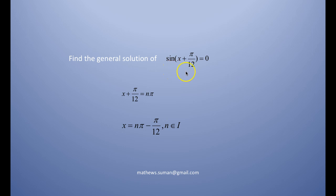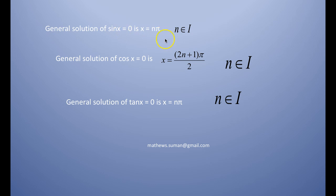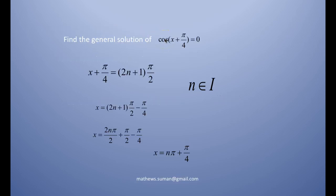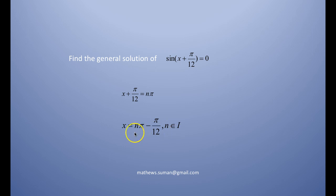Find the general solution of sin(x + π/12) = 0. The general solution of sin x = 0 is x = nπ. So the general solution of sin(x + π/12) = 0 gives x + π/12 = nπ, that is x = nπ − π/12, where n is an integer.